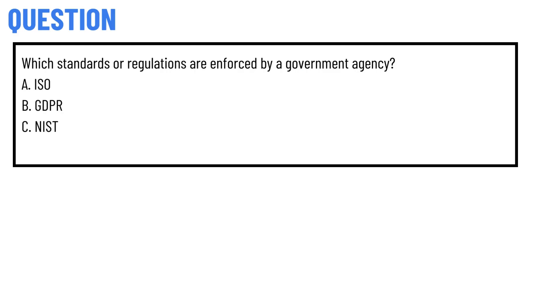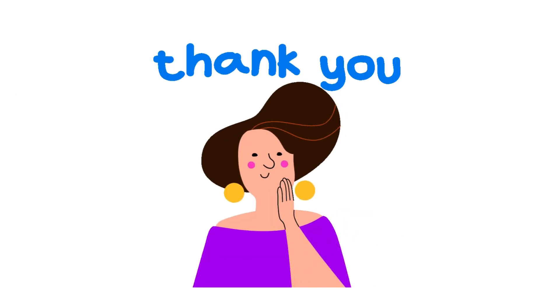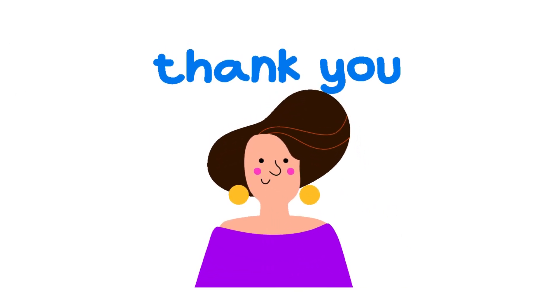Which standards or regulations are enforced by a government agency? Option A: ISO. Option B: GDPR. Option C: NIST. The correct answer is Option B — GDPR. That's the correct answer. If you have any questions, just leave a comment and I will be answering you as soon as I can.